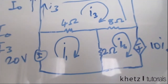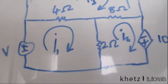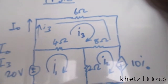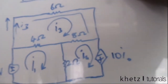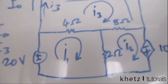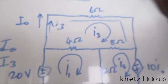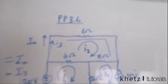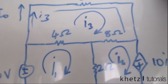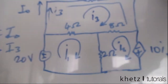Let's start with the mesh that has I.1. A mesh, if you recall from the textbook, is a loop which does not contain any other loops within it. We have three meshes in this case and they are distinctly labeled according to the currents which are in them. So starting at mesh I.1.